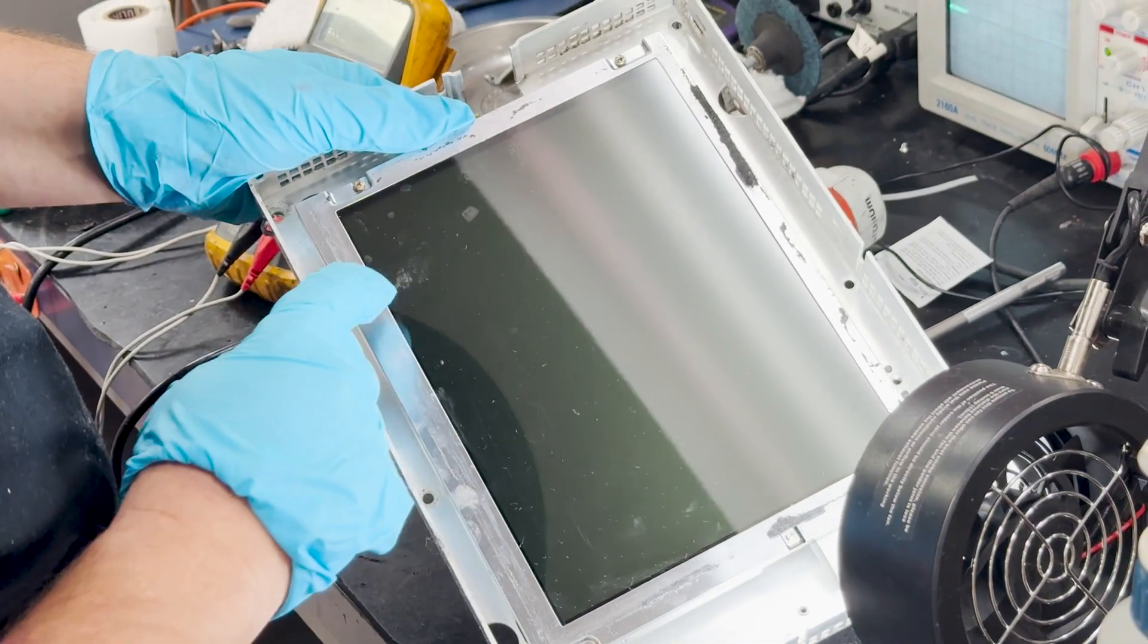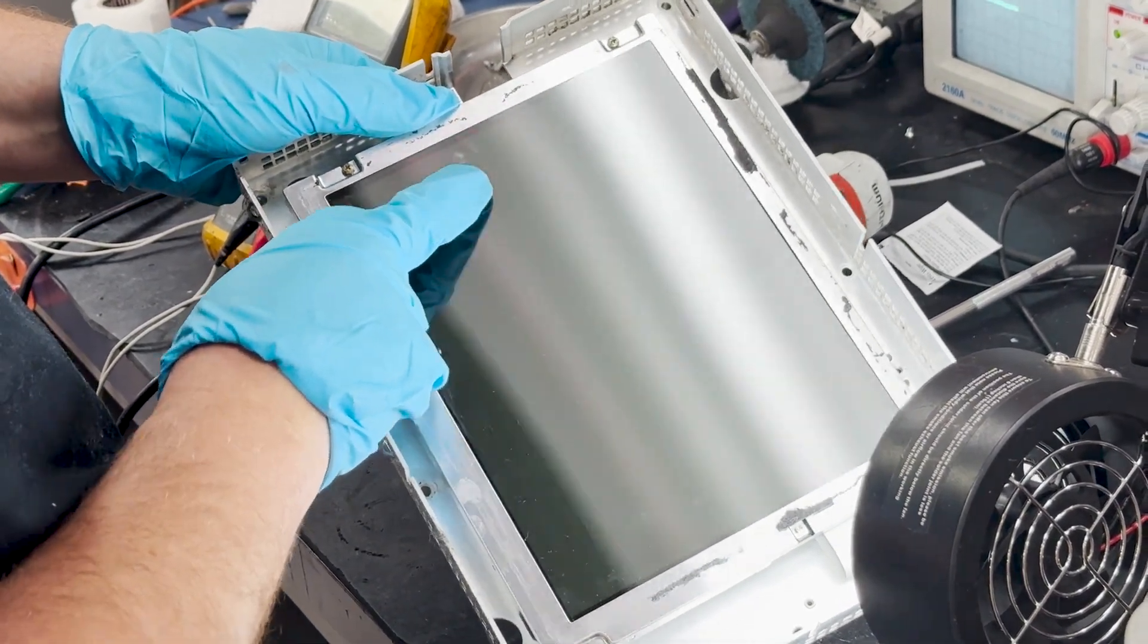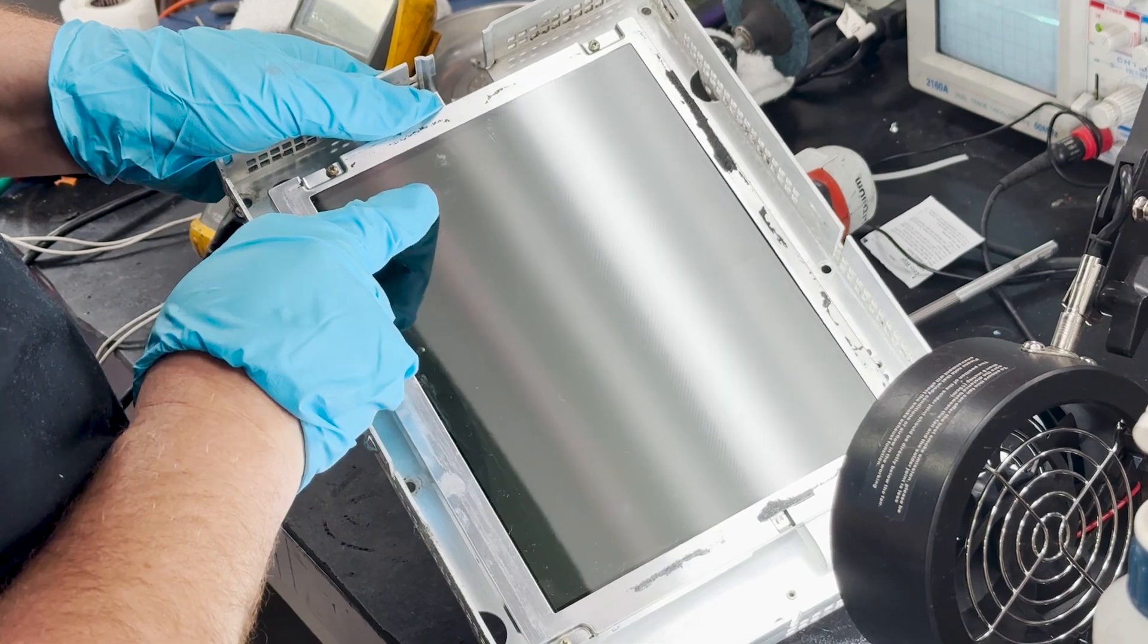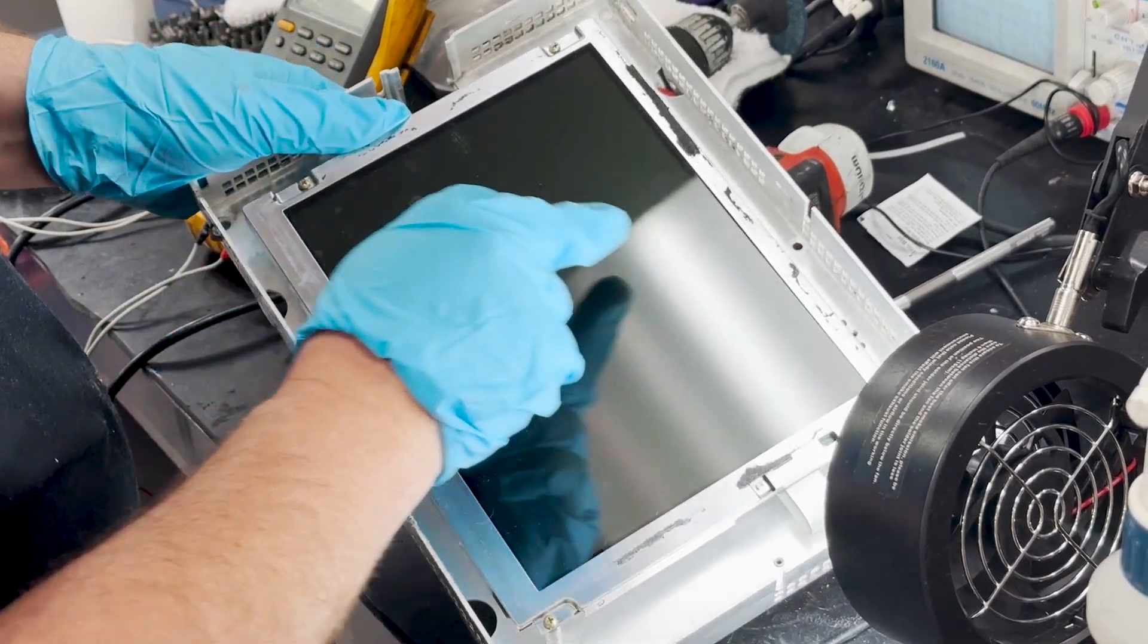While disassembling the unit, we discovered that water had penetrated the LCD panel. Although the LCD may still function with this level of moisture, the water spots could potentially impact the display quality over time. To ensure long-term performance and visual clarity, we will proceed with a complete LCD replacement.